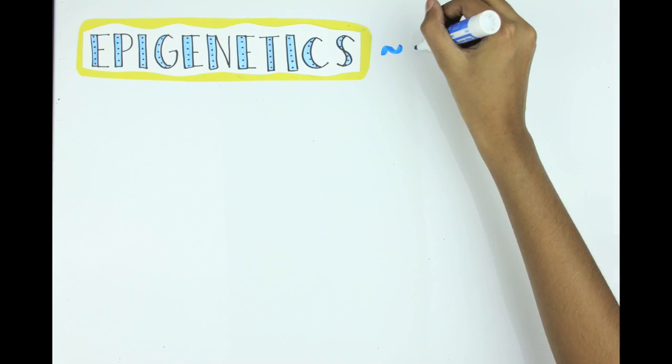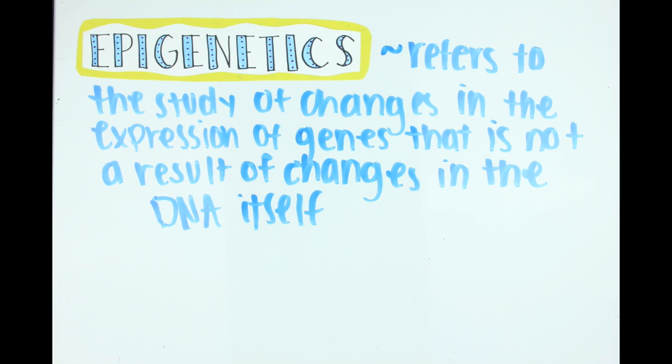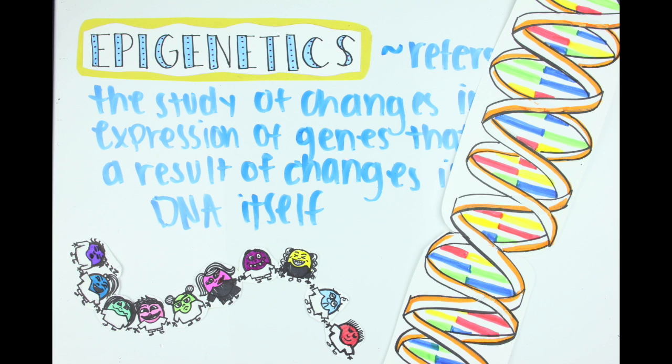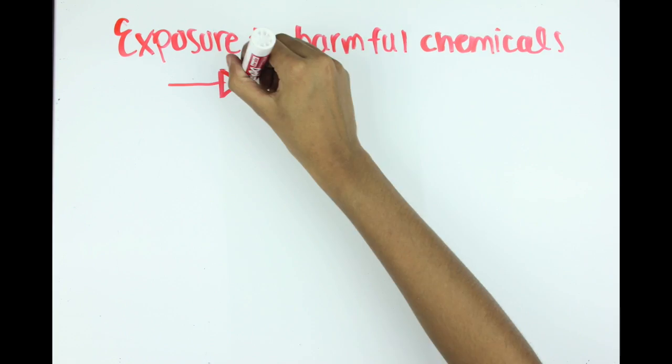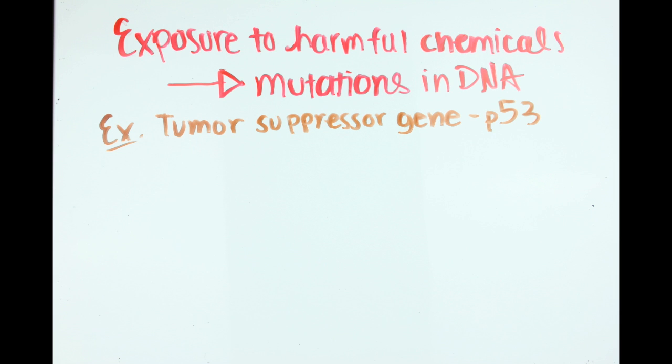Remember that epigenetics thing I mentioned? It refers to the study of changes in the expression of genes that is not a result of changes in the DNA itself. This means controlling what proteins are made without changing the nucleotides of the DNA. You might have heard that exposure to some harmful chemicals can influence gene expression by causing a mutation. Take, for example, the tumor suppressor gene called p53.